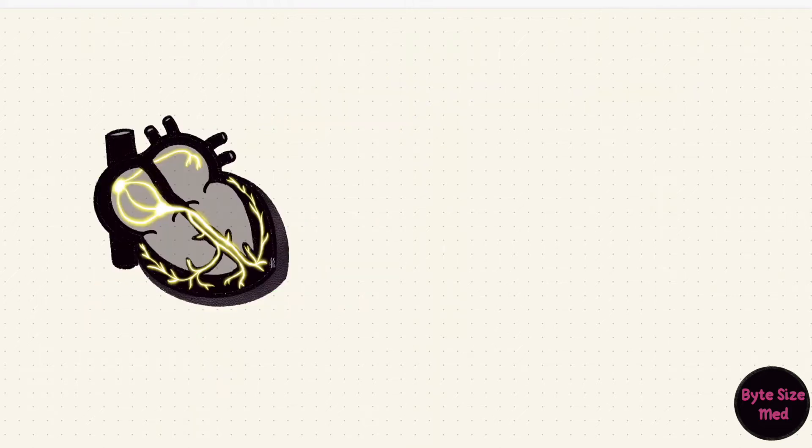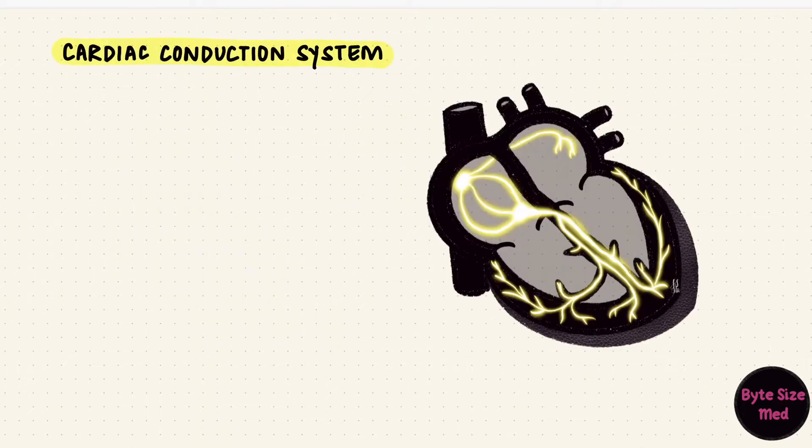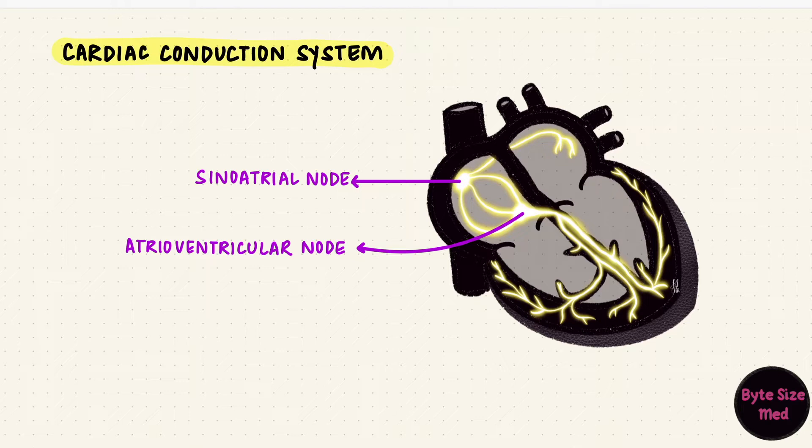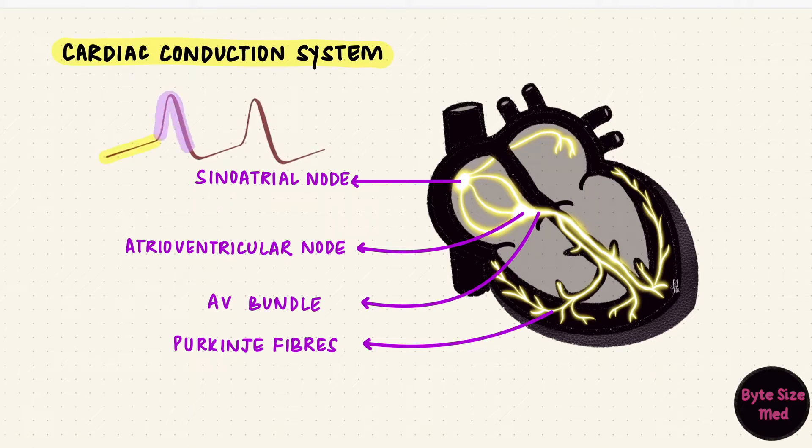The heart has specialized muscle cells which are capable of self-excitation. They can spontaneously generate action potentials without nerves telling them to do so. These cells form the cardiac conduction pathway. This includes the sinoatrial node, the atrioventricular node, the atrioventricular bundle, and the purkinje fibers. Self-excitation is because their resting potentials naturally drift up to threshold and an action potential fires.